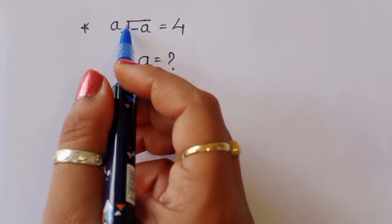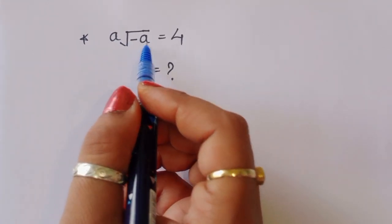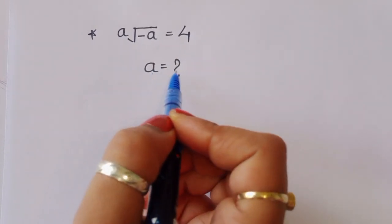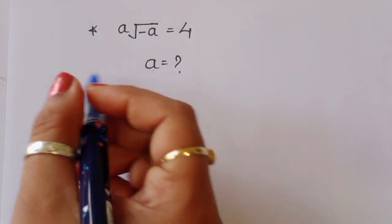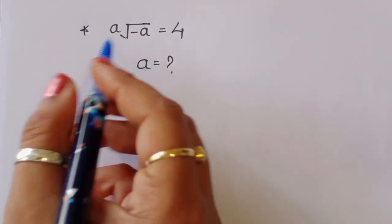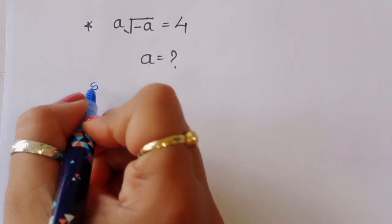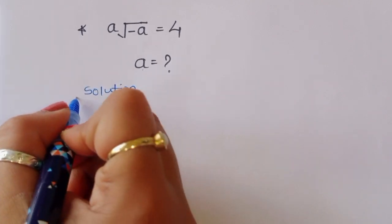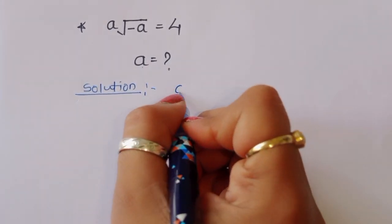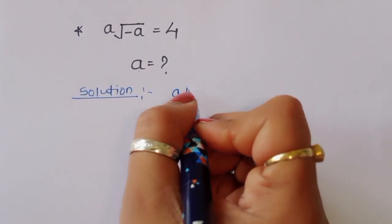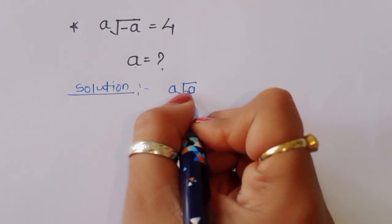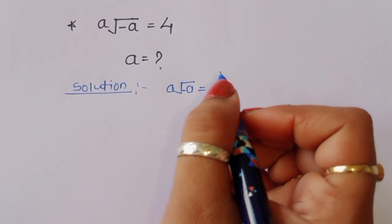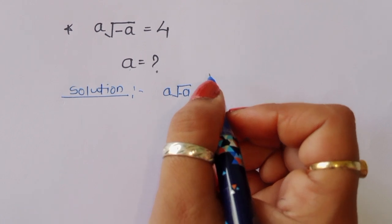The question is: given a to the power square root of minus a is equal to 4, we have to find out the value of a. Let's see the solution. We have minus a to the power one upon a is equal to 4.